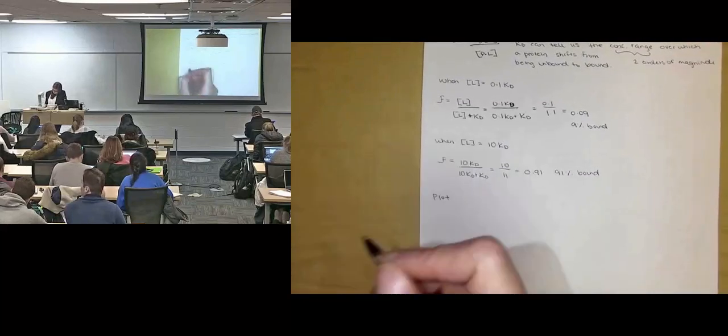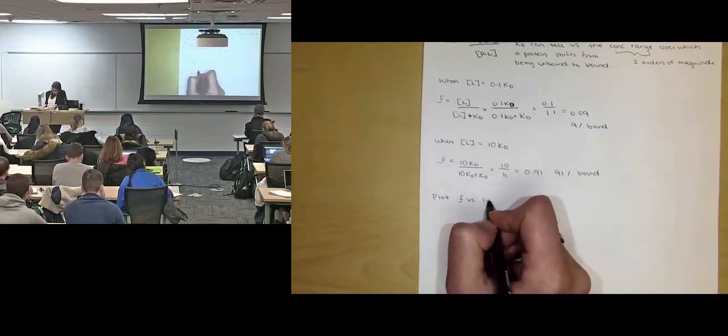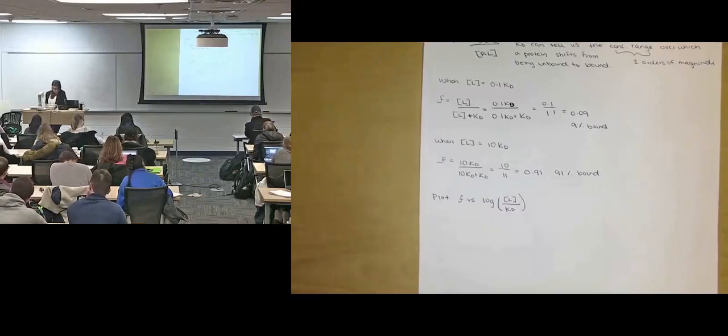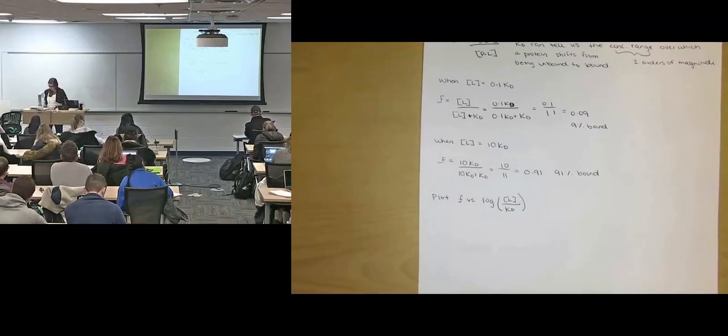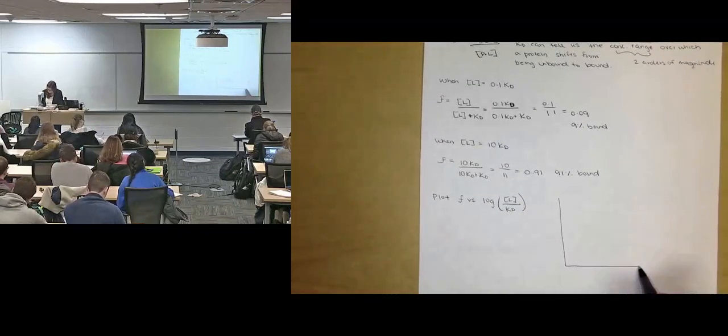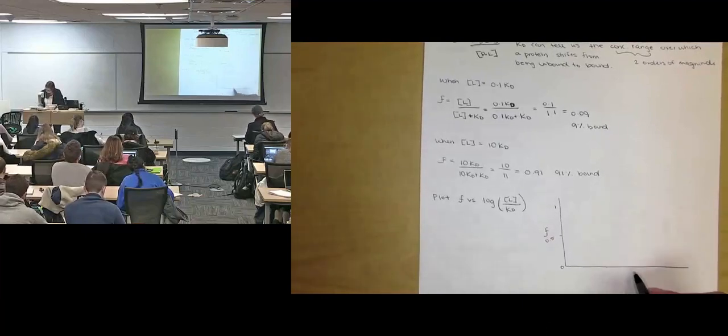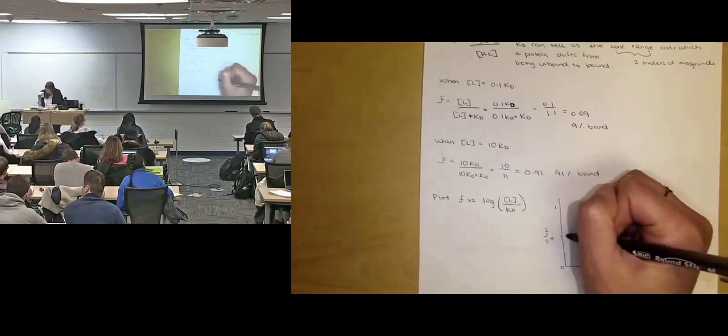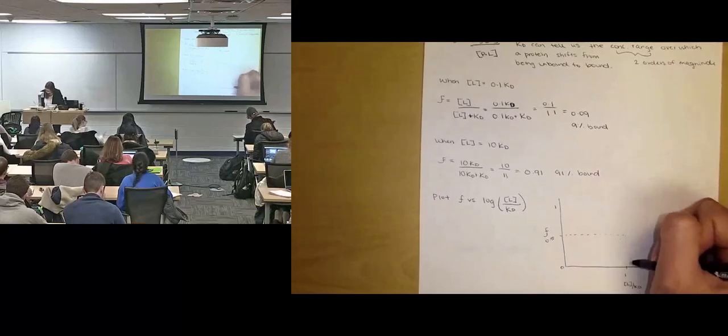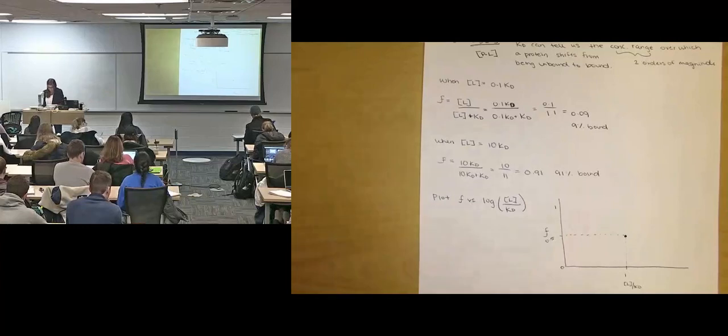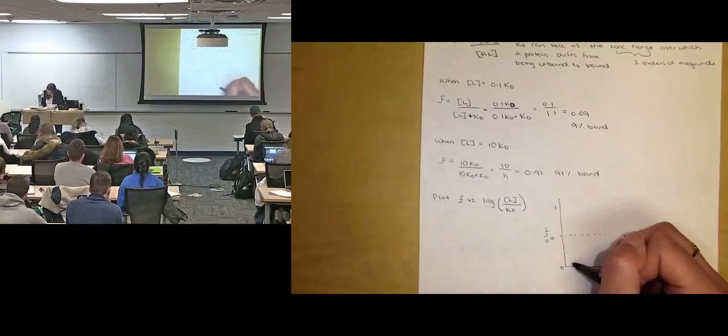So then if you plot fractional saturation versus the log of ligand concentration divided by KD, you'll get a plot that looks something like this. If here's fractional saturation, it goes from 0 to 1. And then at 1, we have L over KD. So we said our dissociation constant was given by the ligand concentration where fractional saturation is half. What we'll have is a curve that looks something like this.